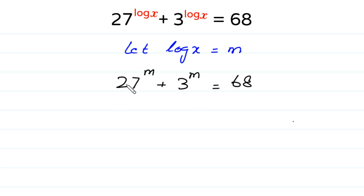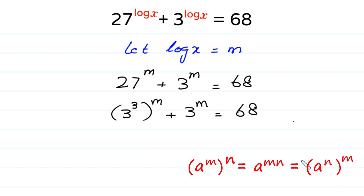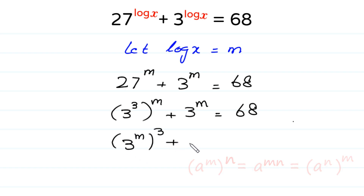Next, this 27 can be written as 3 to the power 3, to the power m, plus 3 to the power m is equal to 68. There is a rule of exponents that a to the power m, to the whole power n, is equal to a to the power n, to the whole power m. According to this rule, we can replace these two powers — writing power m inside the brackets and power 3 outside. Like this: 3 to the power m, to the whole power 3, plus 3 to the power m is equal to 68.